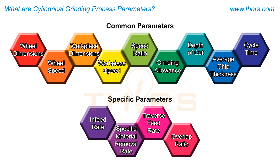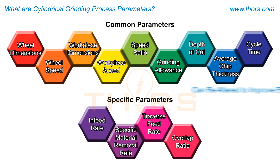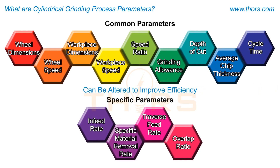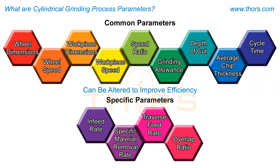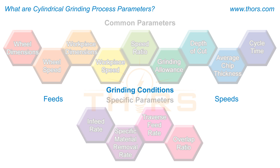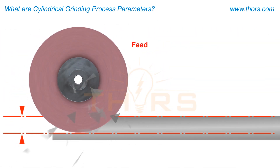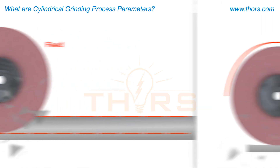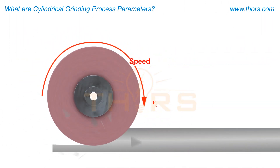Cylindrical grinding process parameters are a set of specific variables that can be altered to improve the efficiency of the cylindrical grinding process. Process parameters define the grinding conditions that are known as feeds and speeds of the grinding process. Feeds are the rates at which the grinding wheel is moved into the workpiece, and speeds are the rates at which the grinding wheel cuts the workpiece.